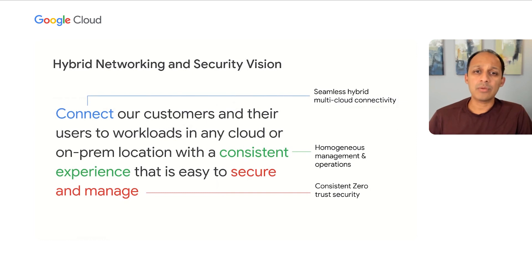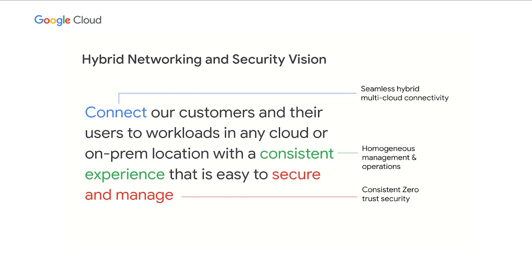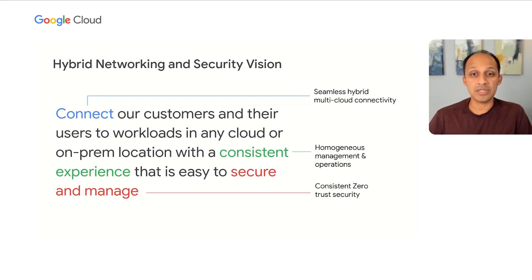To enable this, our main goal and vision for hybrid networking and security is to connect our customers and your users to workloads in any cloud or on-prem location with a consistent experience that is easy to secure and manage. Connect refers to our investments in making connectivity simple and pervasive — build capacity, scale, and performance where you need it. You want to enable reachability and security for all workloads and all services, irrespective of where they reside: on-prem, Google Cloud, or any other cloud. A consistent management and operations experience is needed if we are to simplify and help customers adopt multi-cloud.